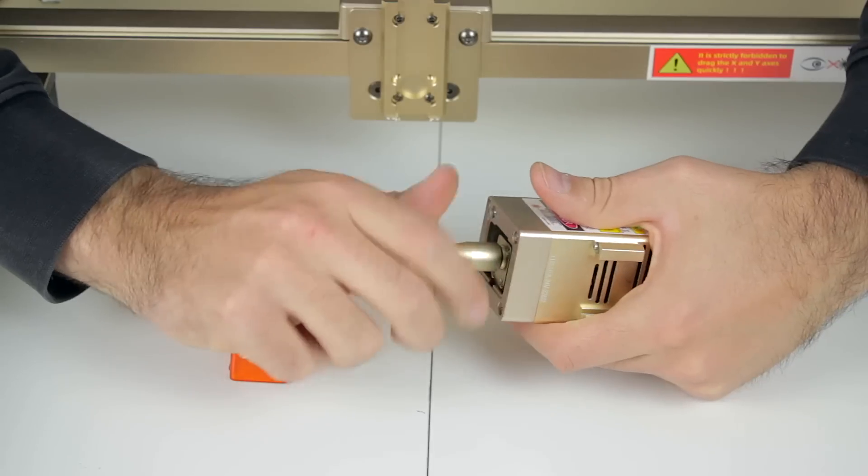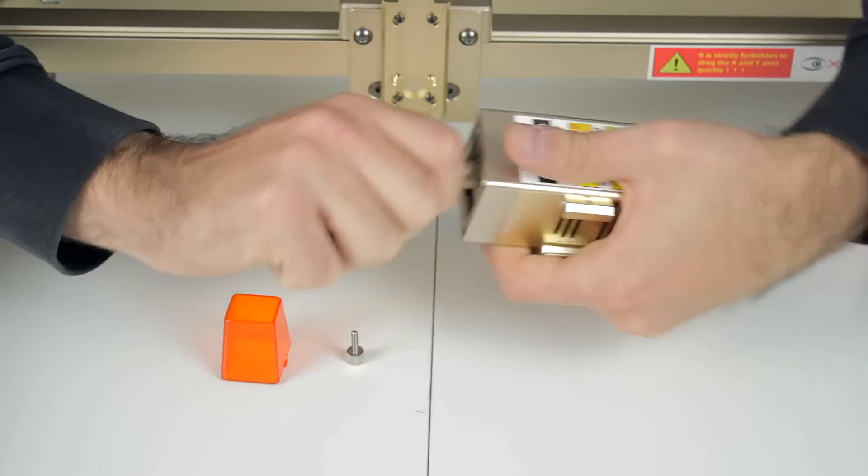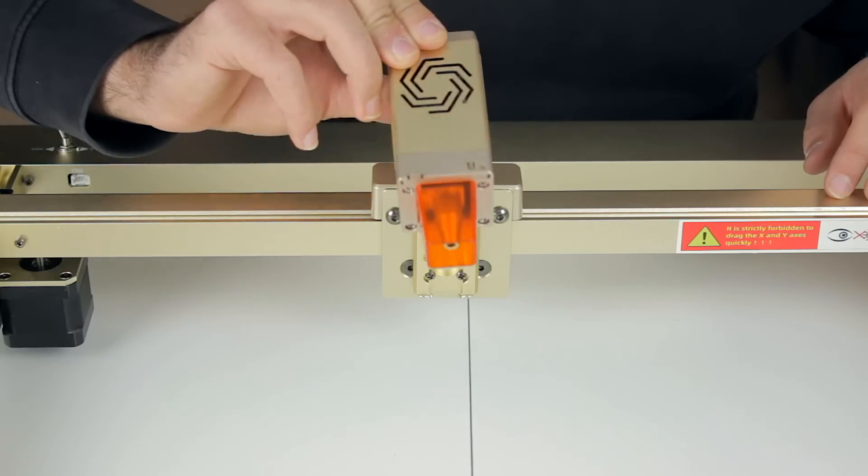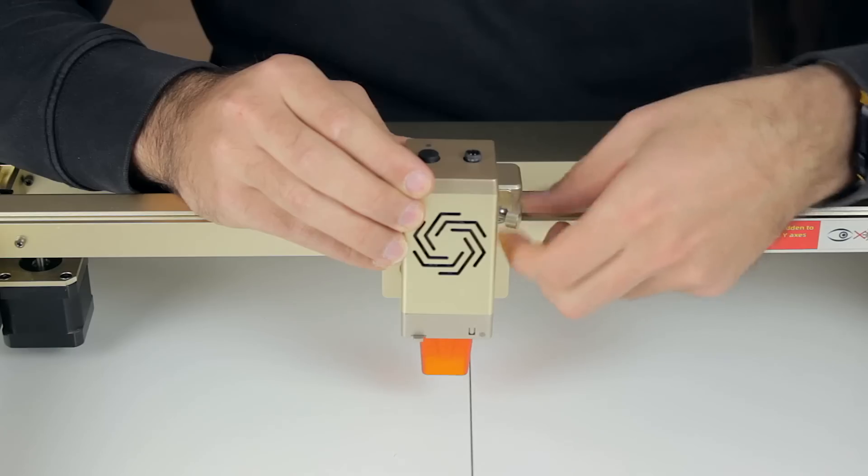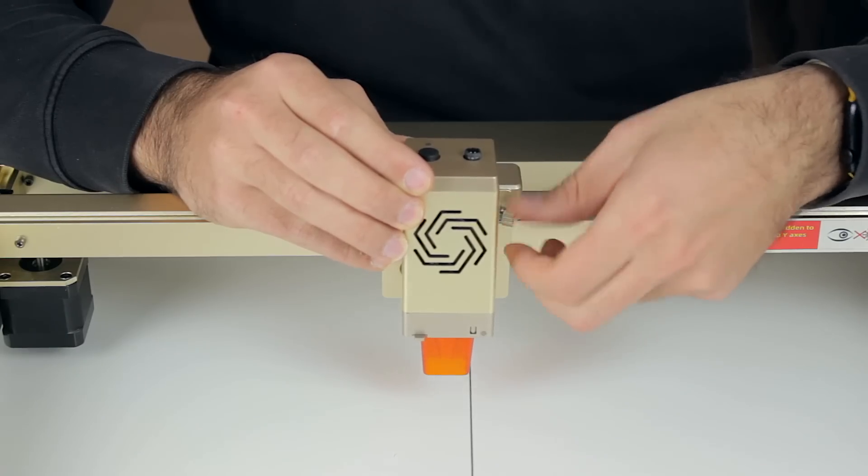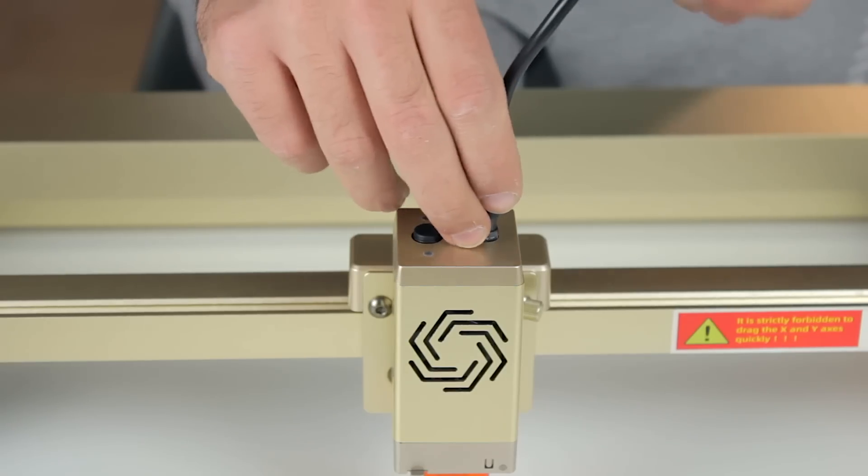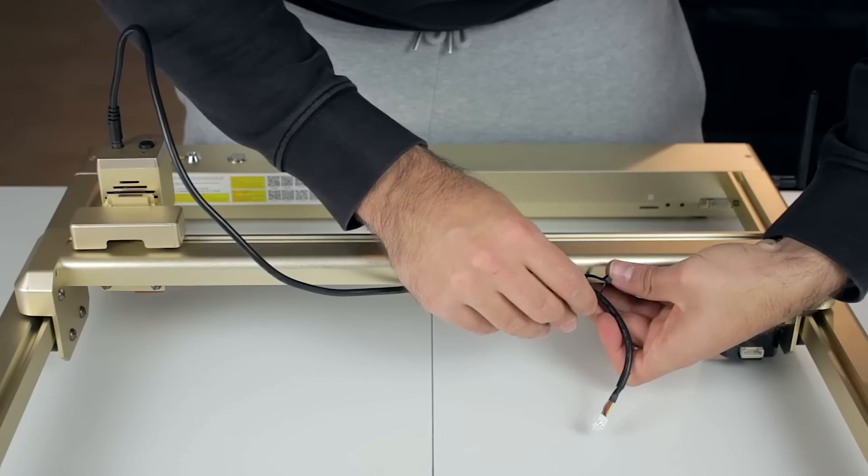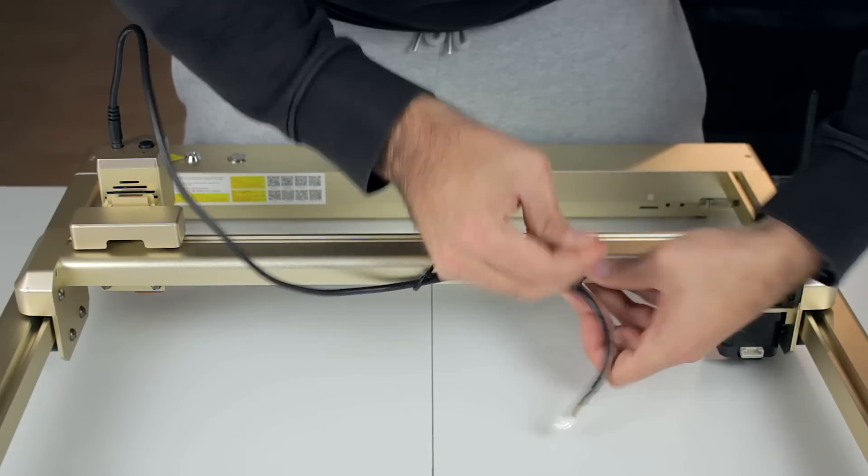Back to the laser head, we're now going to install the air nozzle just like that, and we'll install the orange cover back in place. Once ready, we'll slide it in position and use the provided thumb screw to hold it in place. We'll then connect the cables here on top, and we're going to use some zip ties to bring the cable to this side next to the motor.